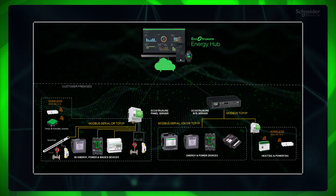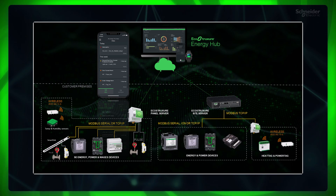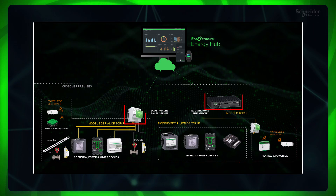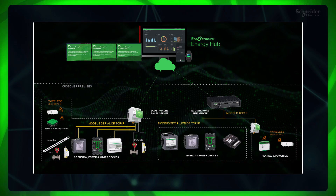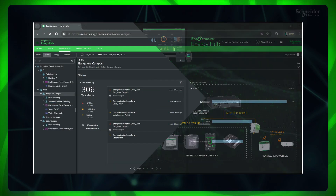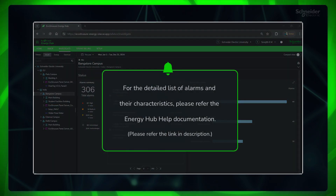The availability of these alarms within your organization depends on various factors, including the type of devices, gateways, and subscription. For the detailed list of alarms and their characteristics, please refer to the Energy Hub help documentation.